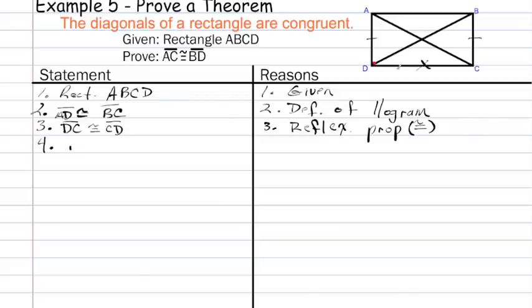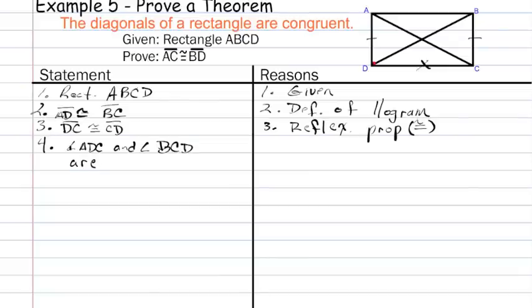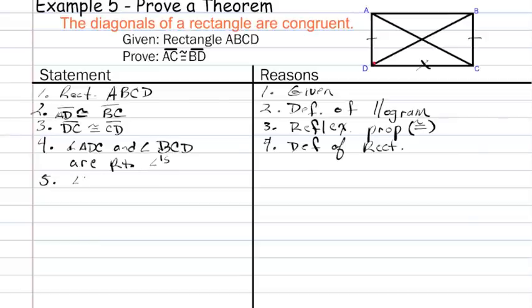The fourth step is to state that angle ADC and angle BCD are right angles, by the definition of rectangle. The next step is to say they're congruent — angle ADC is congruent to angle BCD — and that's because all right angles are congruent.